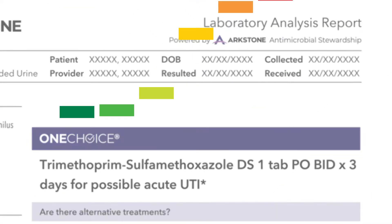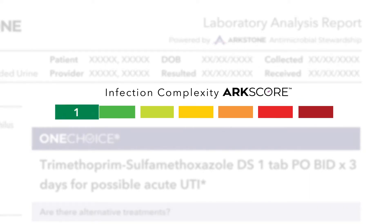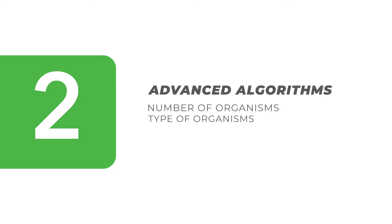Directly above the OneChoice is the Infection Complexity Arc Score, which lets the physician know, on a simple 1-7 scale, how complex the infection will be to treat. This score, assigned by our advanced algorithms, factors the number of organisms, type of organisms, and resistance genes detected.